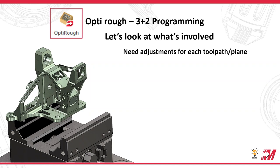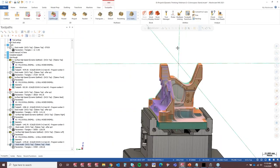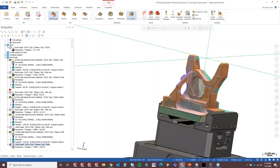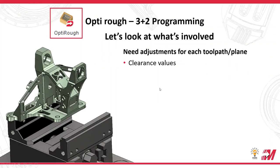It needs specific parameters to do each one of those planes. Some of those concerns are clearance values. For example, a clearance value of zero or 10 millimeters works for the top plane, but if I come to the front plane and use a clearance value of zero, that's going to cause a gouge — that's actually in the middle of the part. So that would need a value out here, something like 100 millimeters for a clearance value. That's the kind of thing you've got to address with OptiRough.